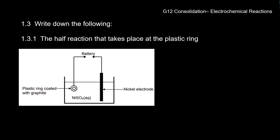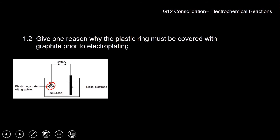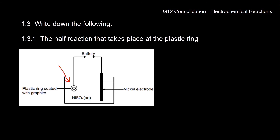Write down the half reaction that takes place at the plastic ring. Looking at the standard reduction potentials table, we find the nickel reaction. Reading it from left to right: the Ni²⁺ ion in aqueous solution takes on two electrons to form nickel solid. So we write: Ni²⁺(aq) + 2e⁻ → Ni(s), where nickel has an oxidation number of zero.